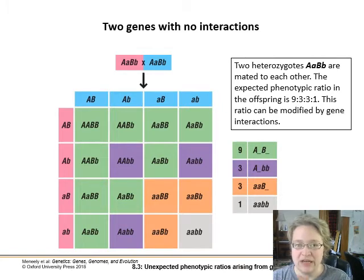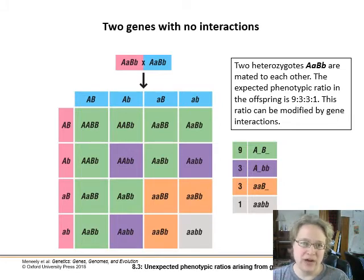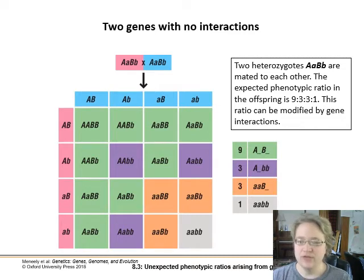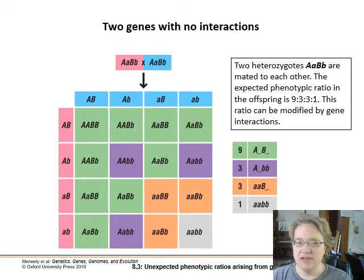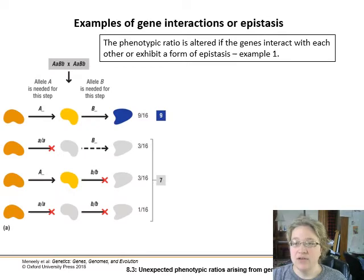In our previous example with the yellow trait and the smooth trait for peas, we had two genes on separate chromosomes that weren't interacting — the yellow phenotype was unaffected by the smooth or wrinkled phenotype. That's where our 9:3:3:1 phenotypic ratio came from. Now this can change based on whether or not the expression of one gene is changing the expression of another gene.